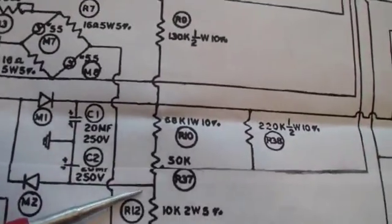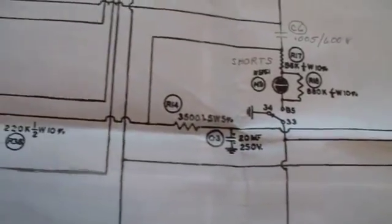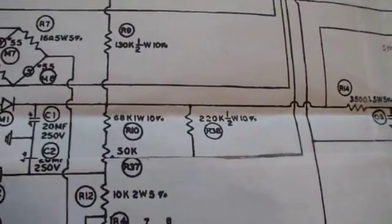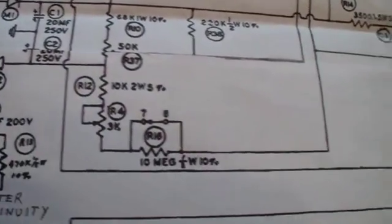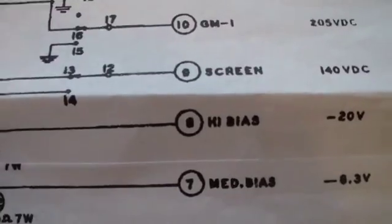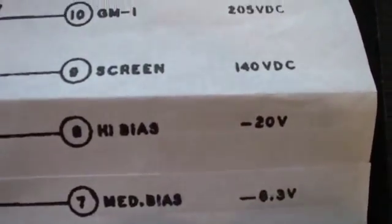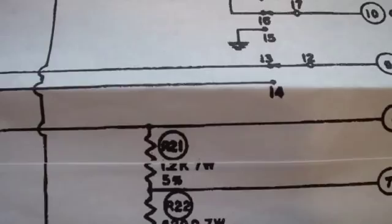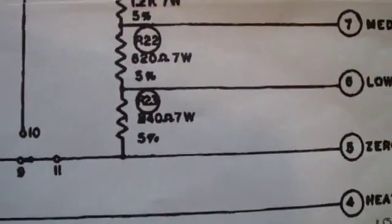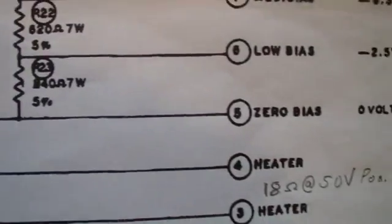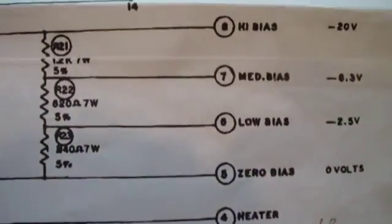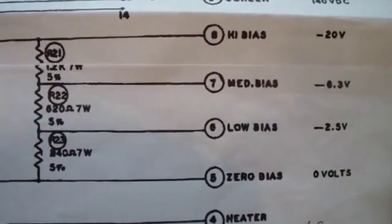That produces a negative voltage here. And that negative voltage eventually gets connected to this high bias position. And then it gets divided down through resistors to a medium bias, a low bias, and eventually a zero bias. Those are the signals that connect to the grid.